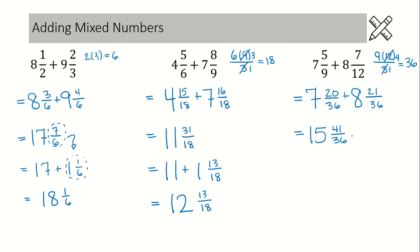We have another improper fraction situation, so we take a step and change this improper fraction to a proper mixed number — that would be 1 and 5 over 36. Then we add these whole numbers back up, and our final answer is 16 and 5 over 36.